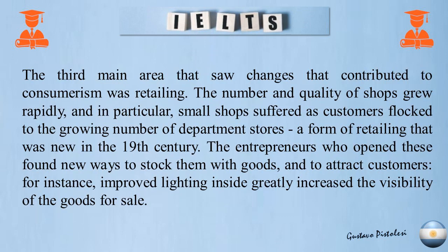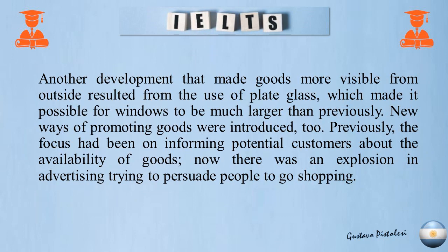The third main area that saw changes contributing to consumerism was retailing. The number and quality of shops grew rapidly, and in particular, small shops suffered as customers and entrepreneurs flocked to the growing number of department stores — a form of retailing that was new in the 19th century. The entrepreneurs who opened these found new ways to stock them with goods and to attract customers. For instance, improved lighting inside greatly increased the visibility of the goods for sale. Another development that made goods more visible from outside resulted from the use of plate glass, which made it possible for windows to be much larger than previously.